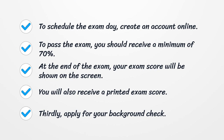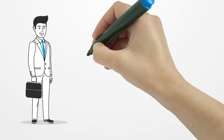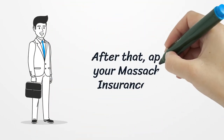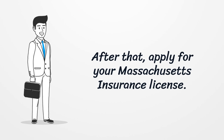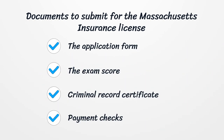Thirdly, apply for your background check. After that, apply for your Massachusetts Insurance License. Documents to submit for the Massachusetts Insurance License include: the application form, the exam score, a criminal record certificate, and payment checks.